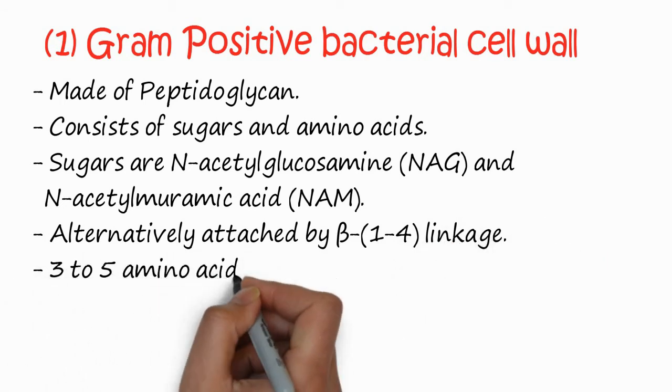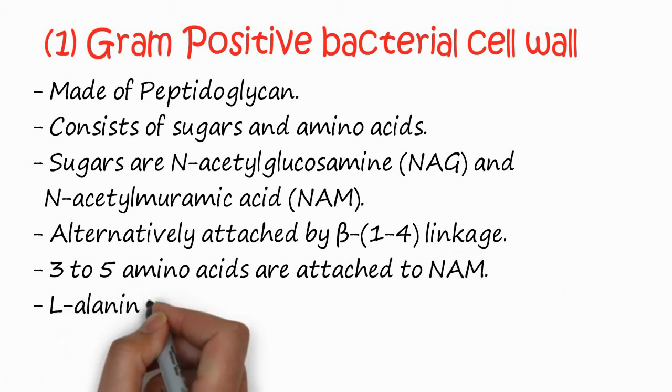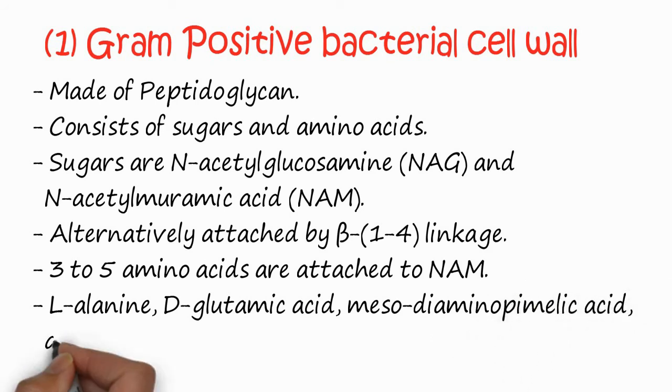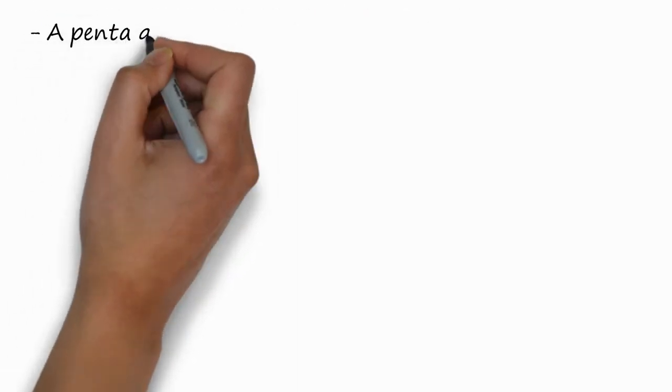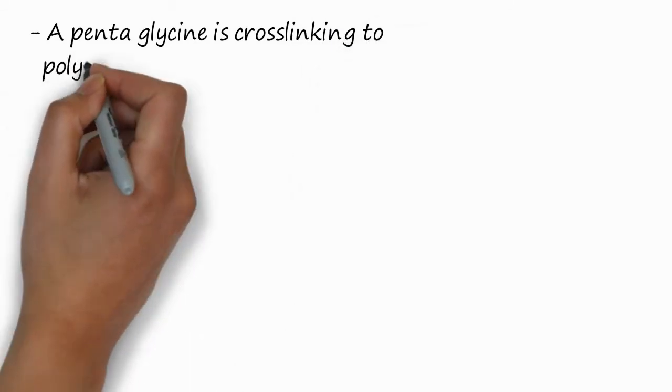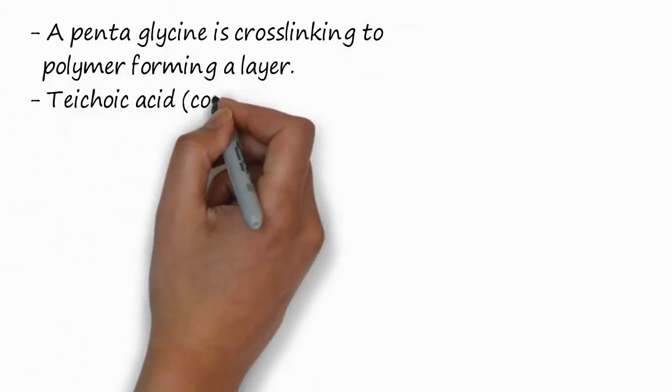The amino acids are 3 to 5 and are usually attached to NAM. L-alanine, glutamic acid, meso-diaminopimelic acid, and D-alanines are the amino acids present which are attached to NAM. One layer is attached to another by a pentaglycine cross-linking.